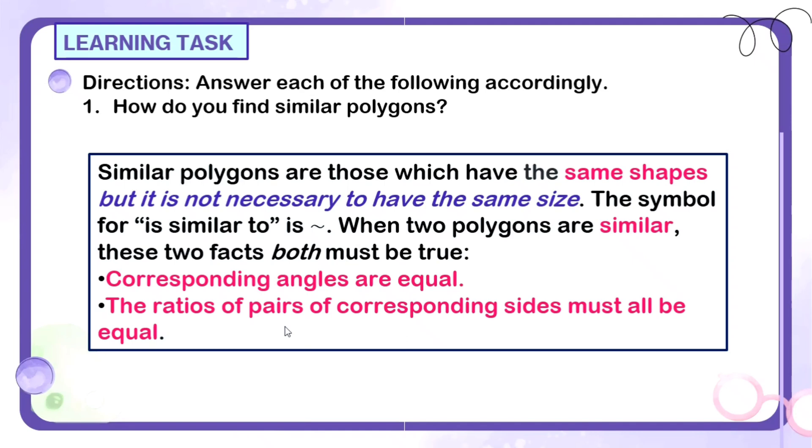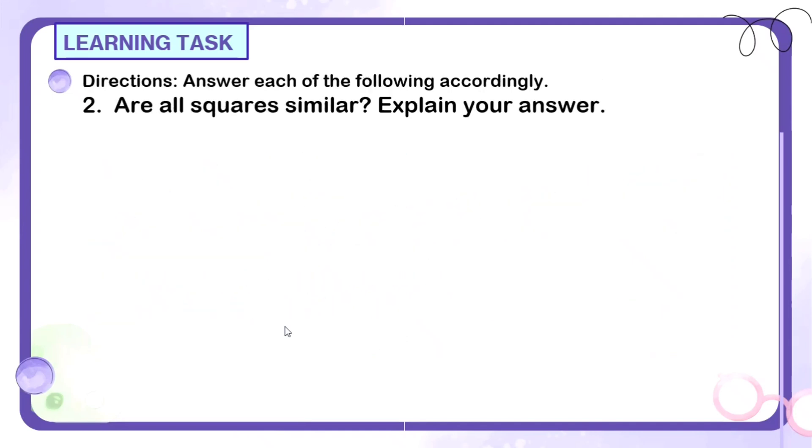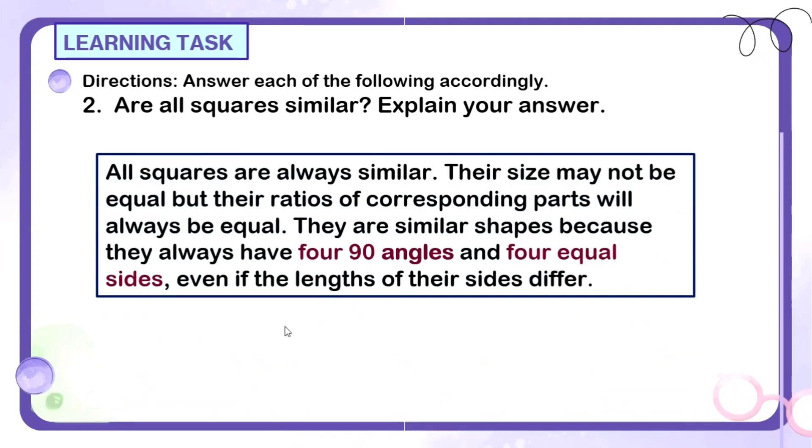So magkaiba ang similar polygons sa congruent polygons. Next question. Are all squares similar? Explain your answer. So ano sa palagay nyo? Similar ba lahat ng square? Okay, the answer is yes. All squares are always similar. Their size may be not equal, but their ratios of corresponding parts will always be equal.